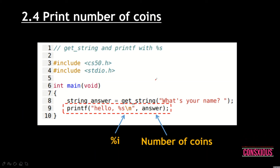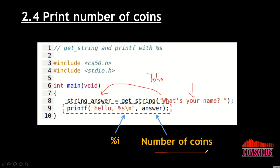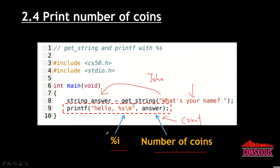Last, we print the number of coins. As shown in the printf example, if you prompt the user for a name and store it in a string, you print it using %s. For our case, the number of coins is an integer, so we use %i and pass the count variable. That's how we construct the full Cash program. Now please pause the video and try to solve the problem before continuing to the solution section.